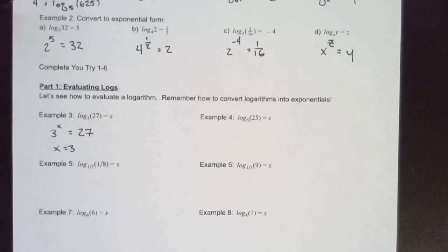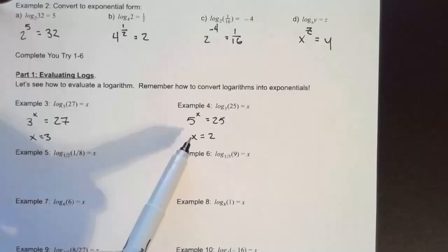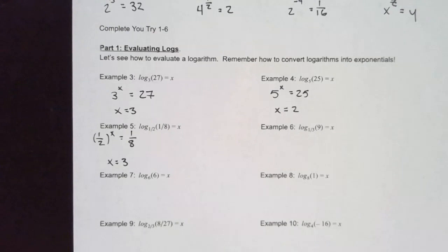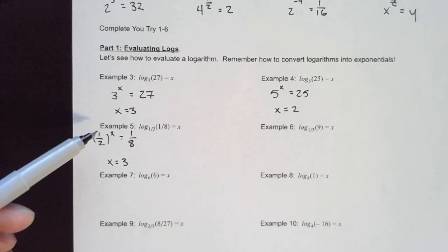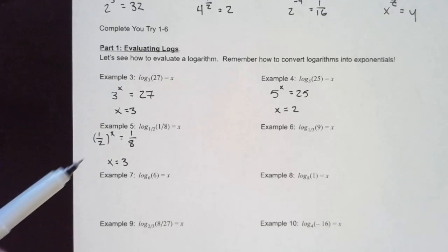Let's look at example 4: 5 to what power equals 25? That's 5 squared. For example 5, remember when you raise a fraction to an exponent you raise both numerator and denominator to that exponent. One to any power is just one, but we need to think about 2 to what power gives us 8 — that's 3, so X equals 3.